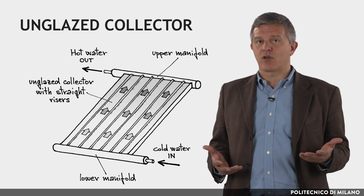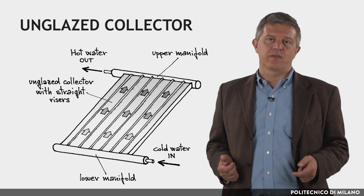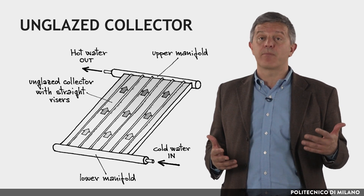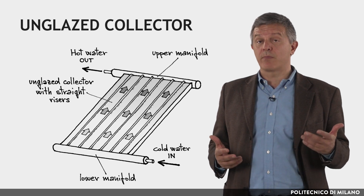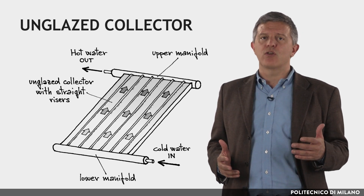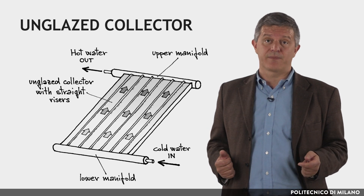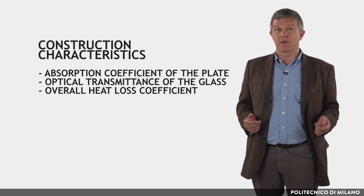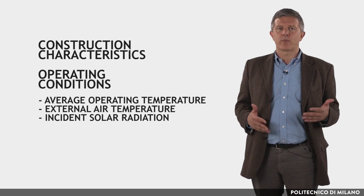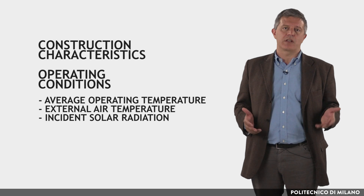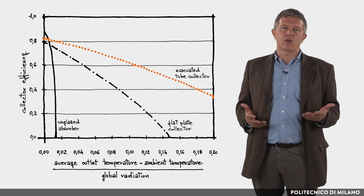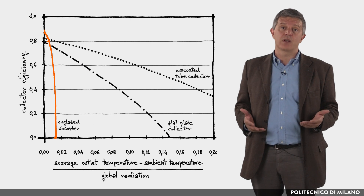The unglazed collectors, or plastic absorbers, are very simple and quite inexpensive. These collectors are specially designed for low temperature applications and are made from ultraviolet resistant plastic. The heat losses are higher than in the two types mentioned above, but the good cost-benefit ratio makes them a remarkable product, especially in hot climates. The efficiency of a solar collector depends on its construction characteristics — absorption coefficient of the plate, optical transmittance of the glass, and overall heat loss coefficient — but also on operating conditions such as average operating temperature, external air temperature, incident solar radiation, orientation and inclination. In general, efficiency is very good for evacuated collectors, good for flat collectors and satisfactory for unglazed collectors.